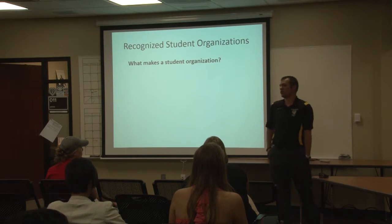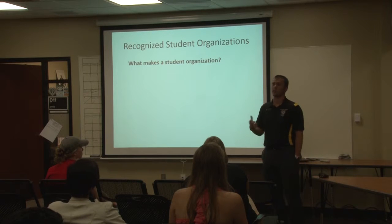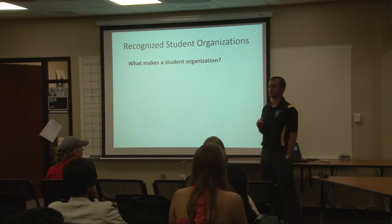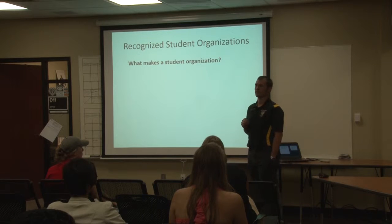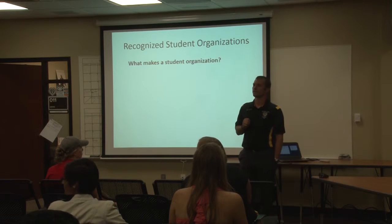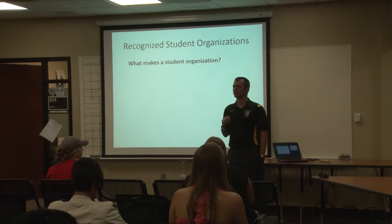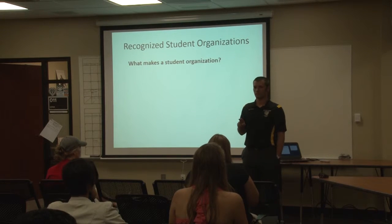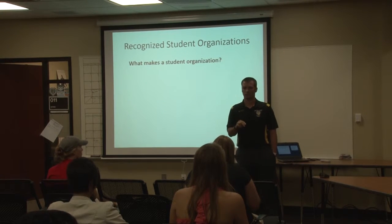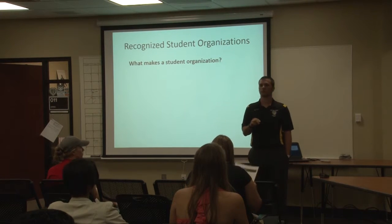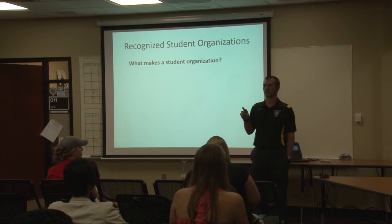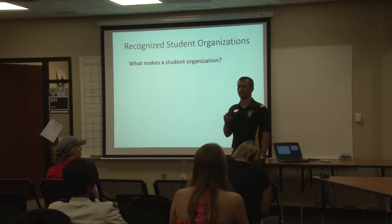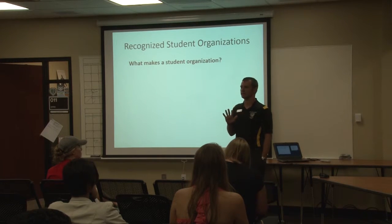You are all student organizations, so who can tell me — what does it take to be a student organization? What are the requirements? You have to be registered on TigerLink. You need a faculty sponsor, a president, a treasurer, and five student members. Good — so faculty or staff advisor, two officers — president and treasurer — and at least five student members.